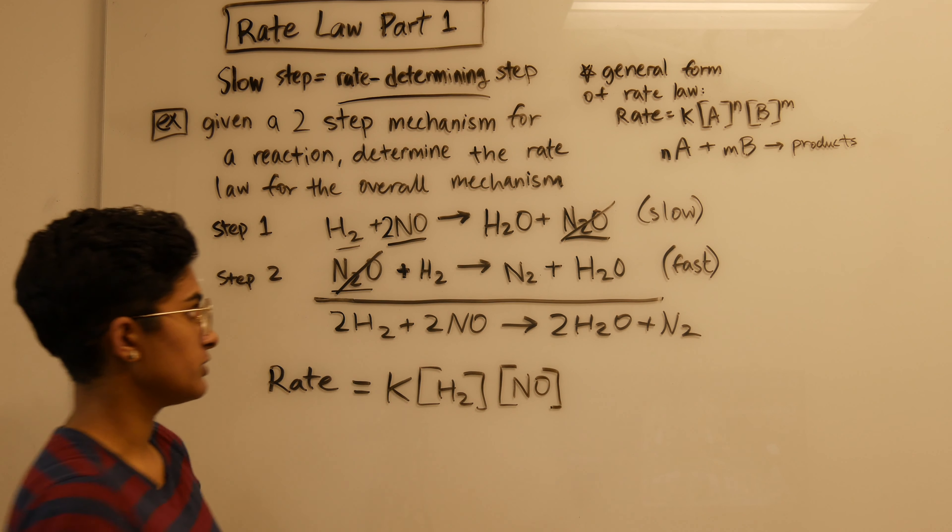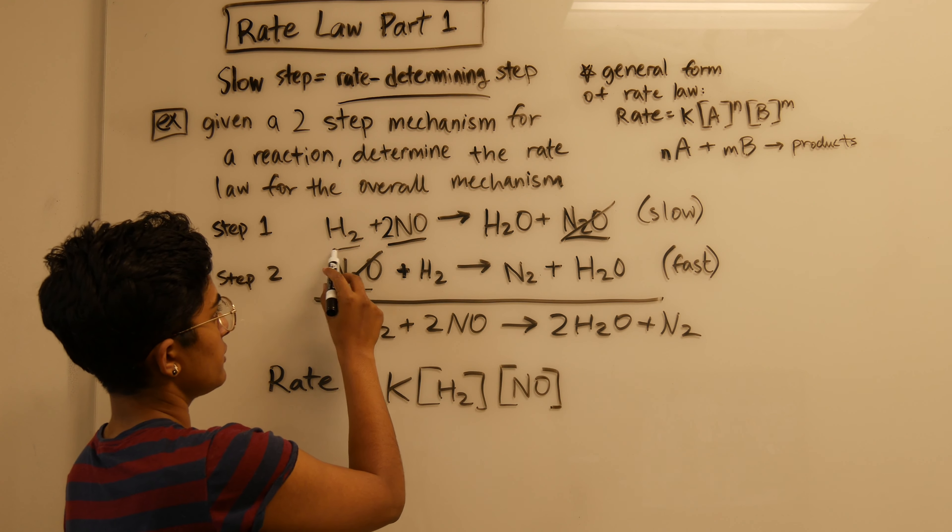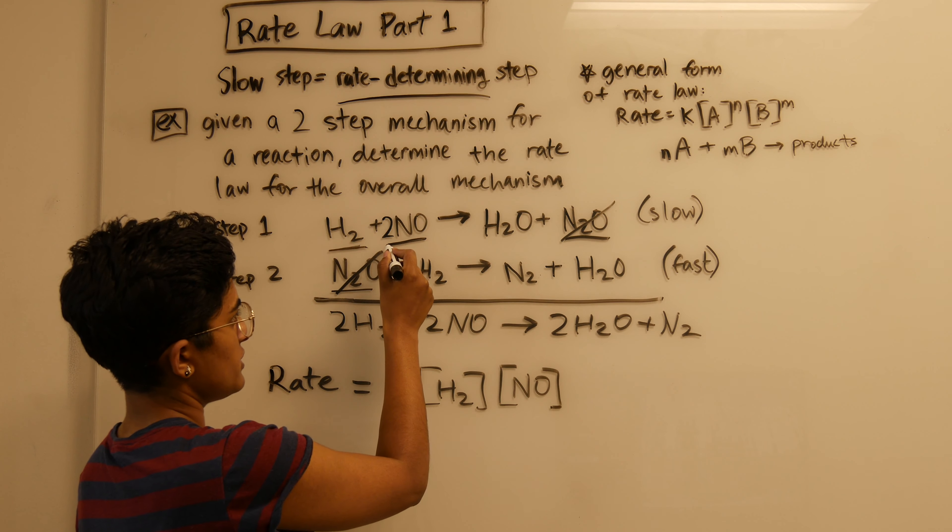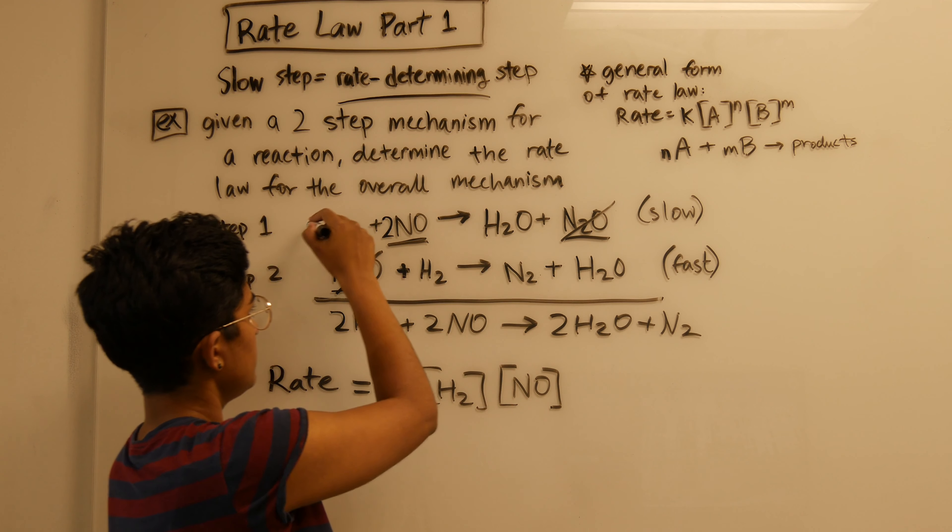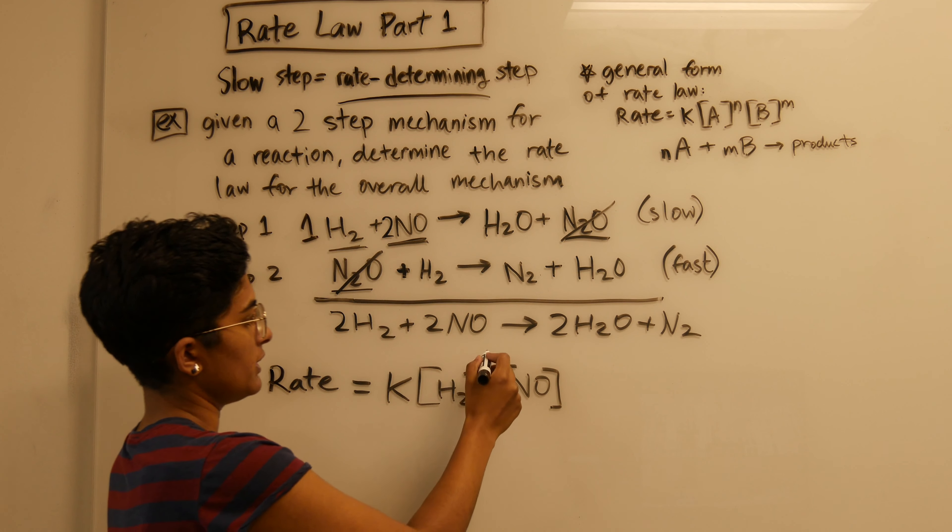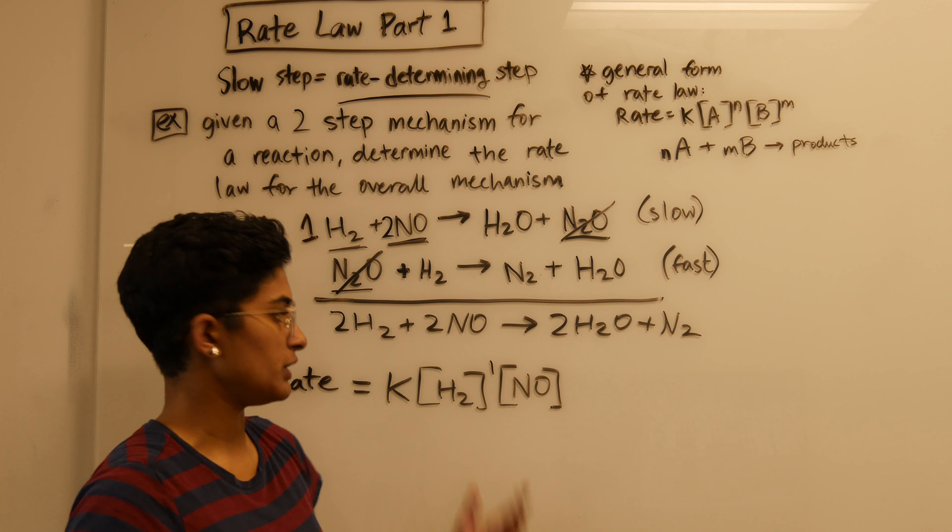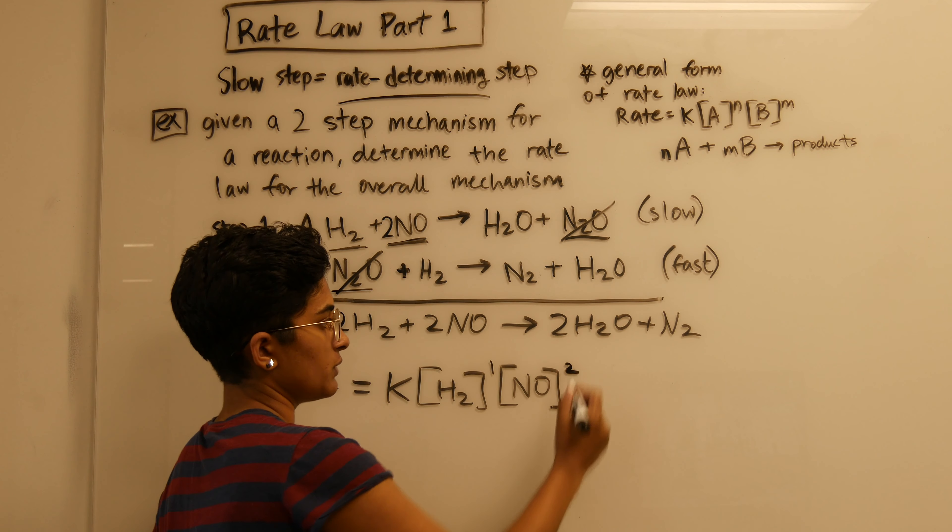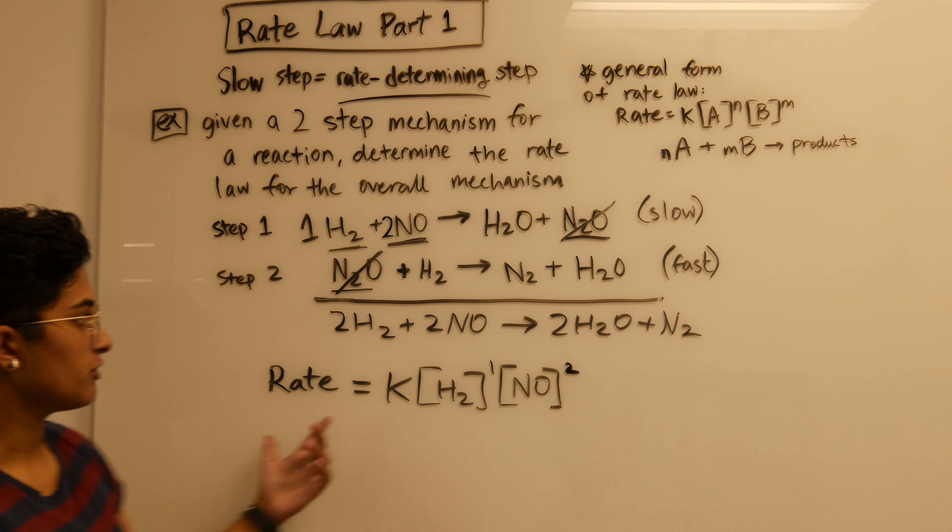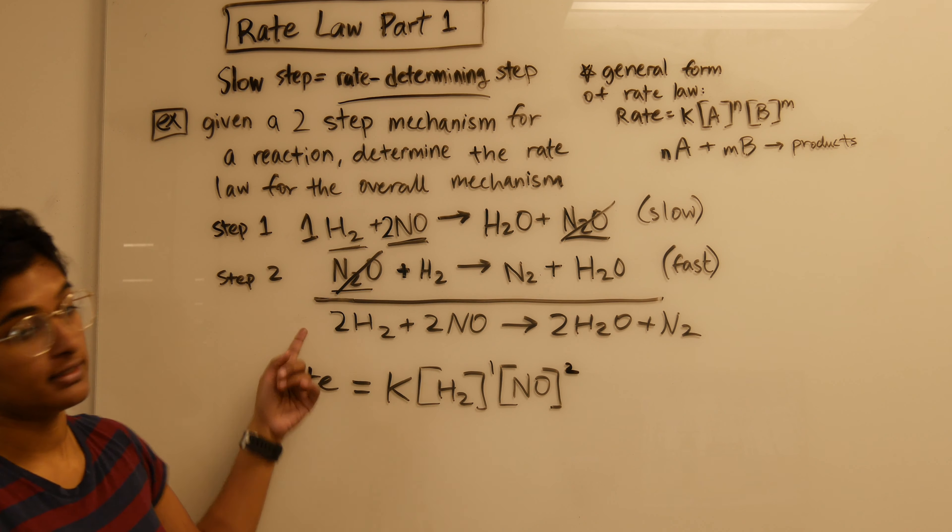The important thing to remember is that you have to include the coefficients for these reactants as exponents. The coefficient here is just one so we don't really have to write that, and then the coefficient for NO would be squared. So this is what the overall rate law looks like for this reaction.